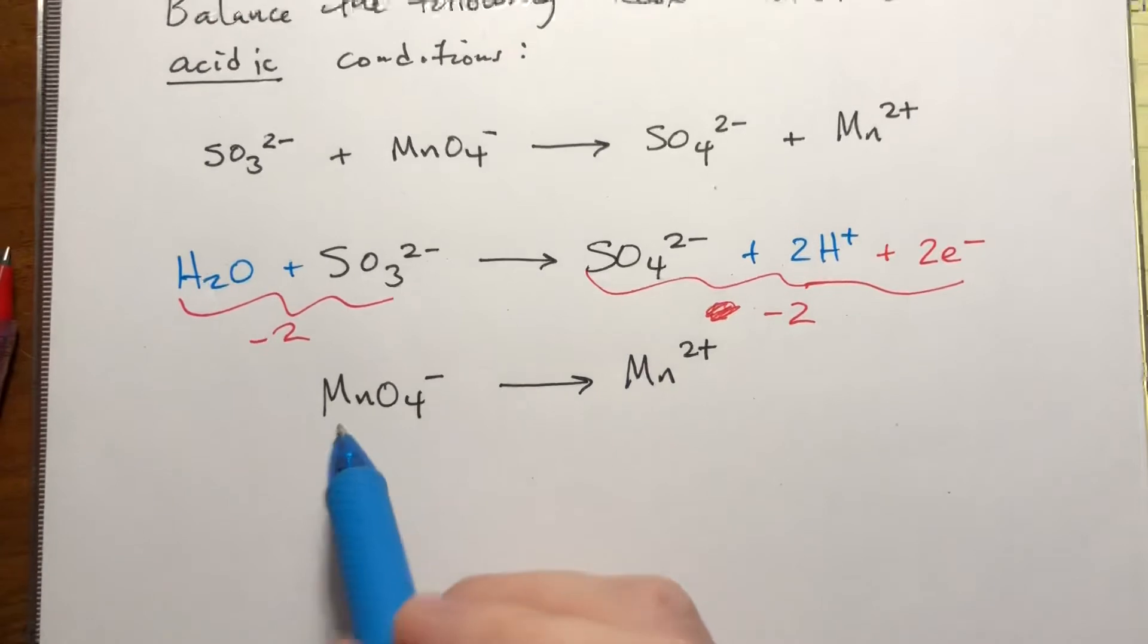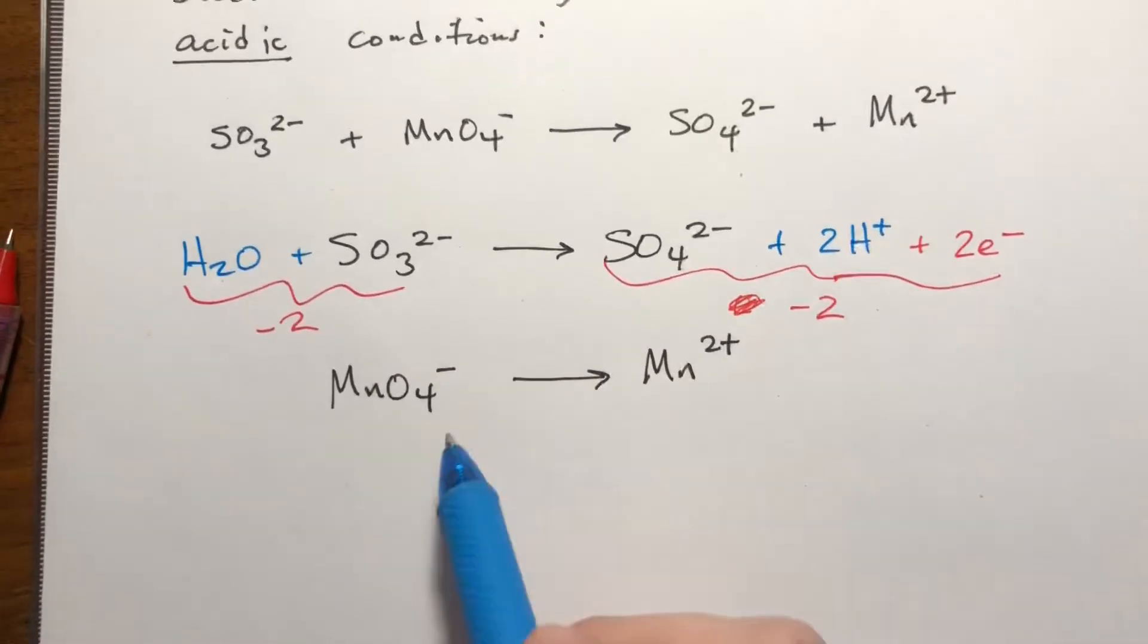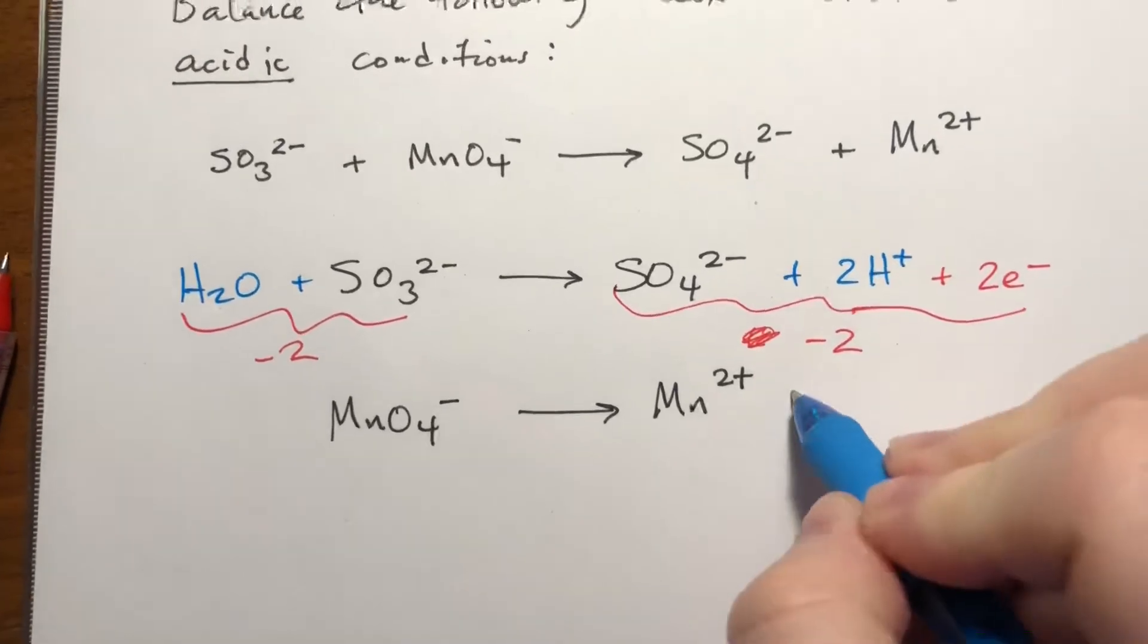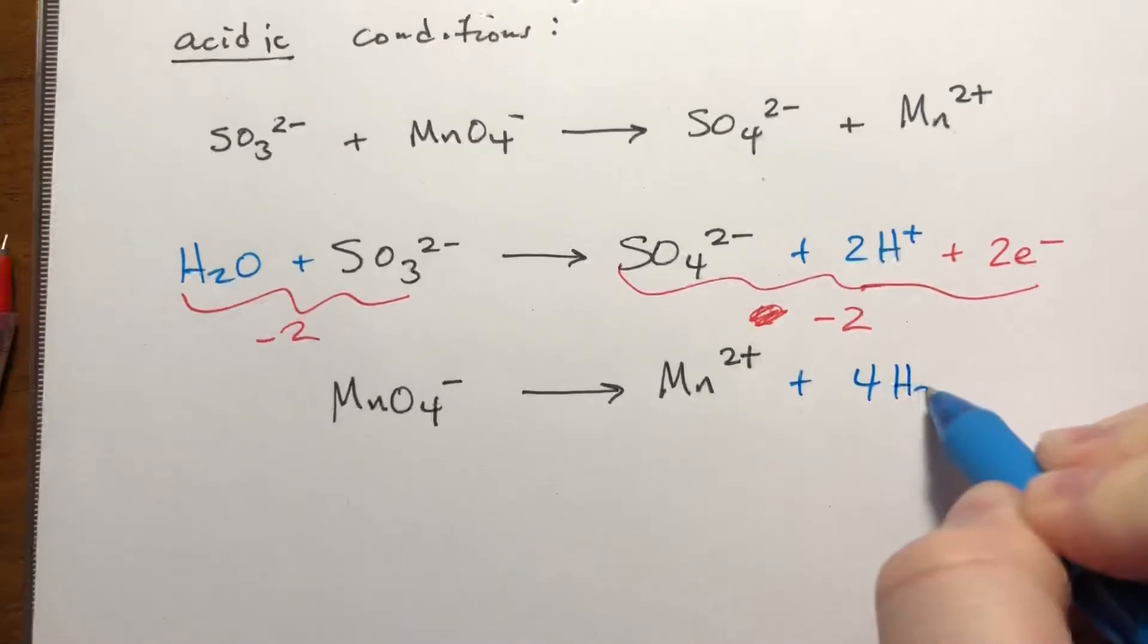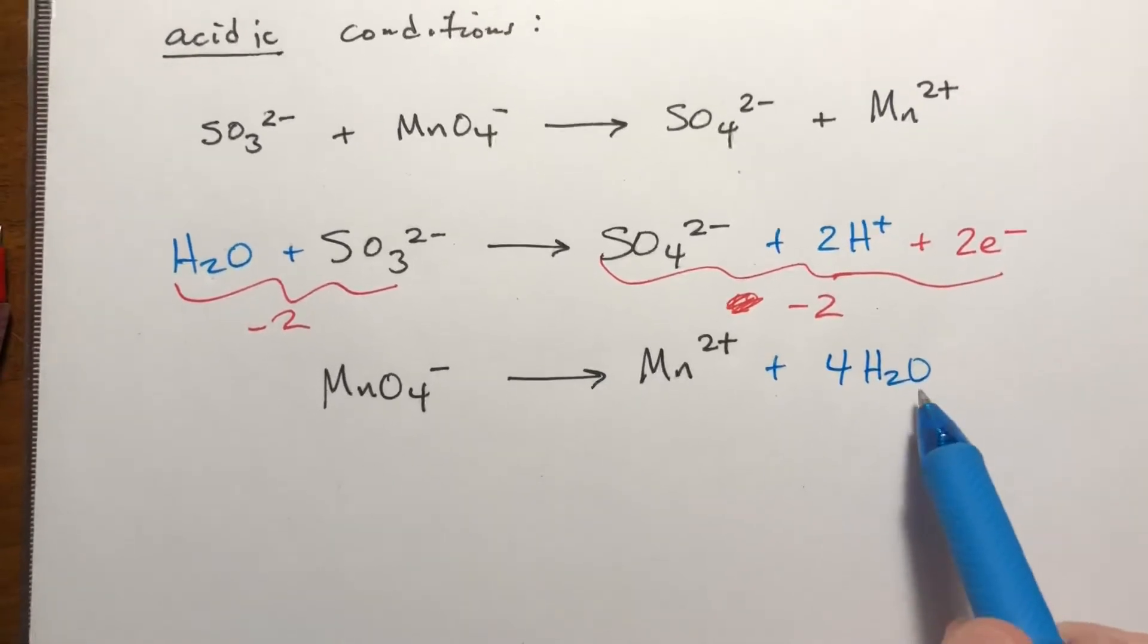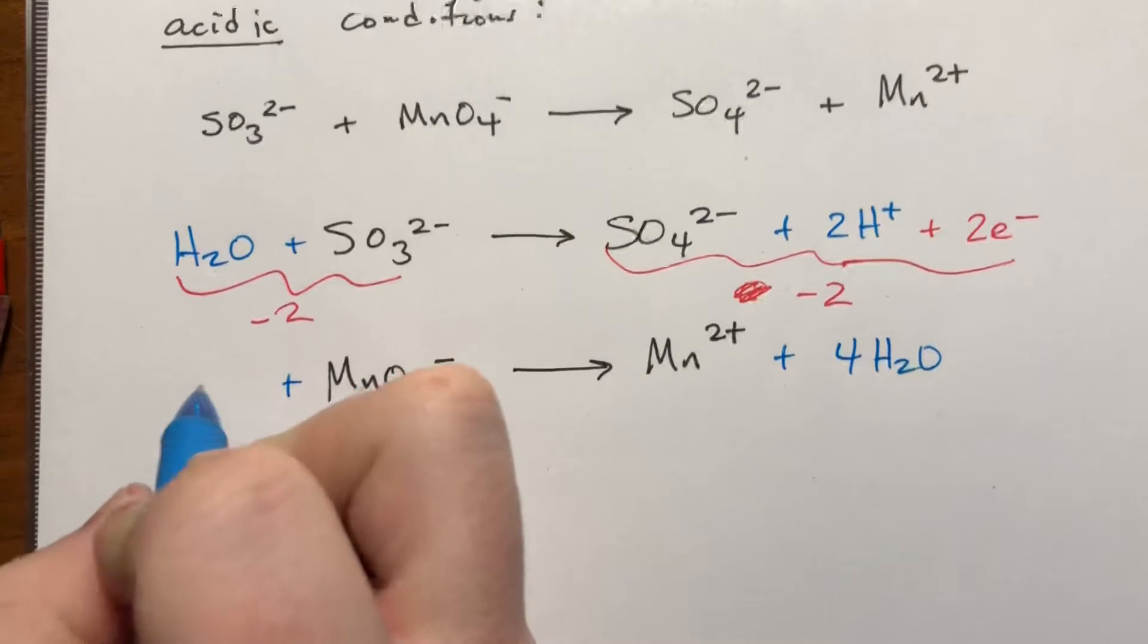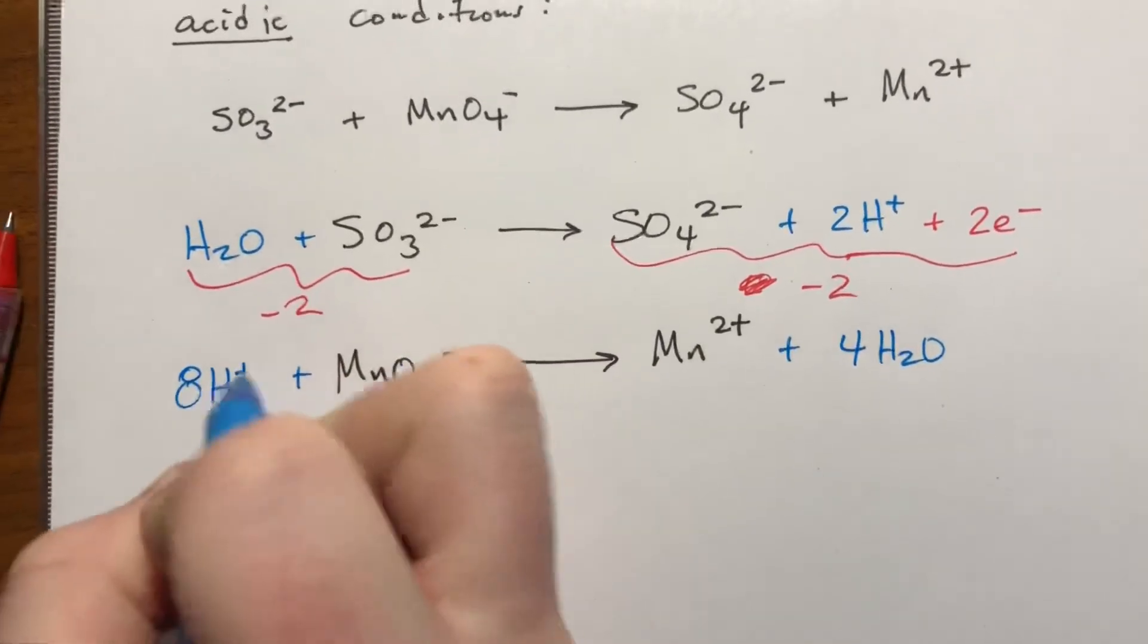Now we're gonna do the other one. We have one Mn, one Mn, so that's encouraging. Four oxygens, zero oxygens. So we can add waters or H pluses anywhere we want. Water is our only source of oxygen, so we're gonna add that. This has now introduced eight hydrogens on that side, so we have to add eight H pluses over here.